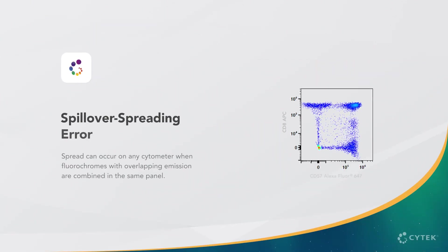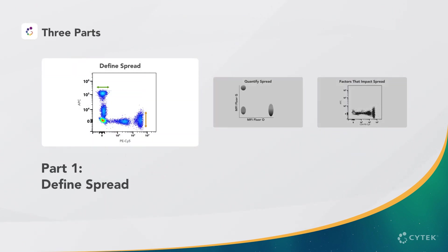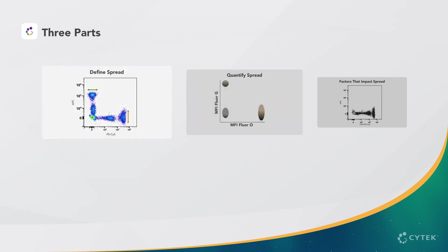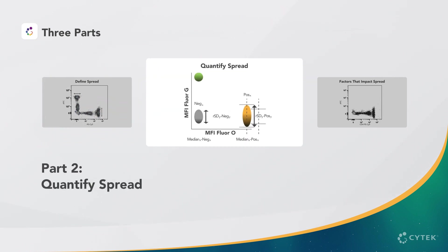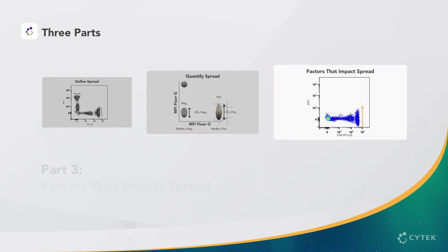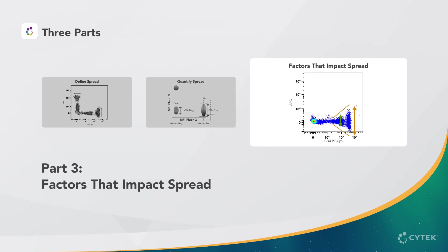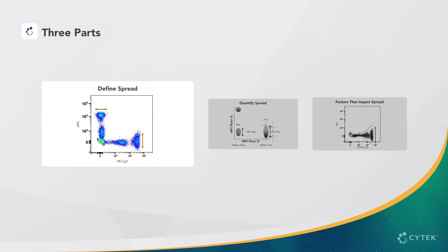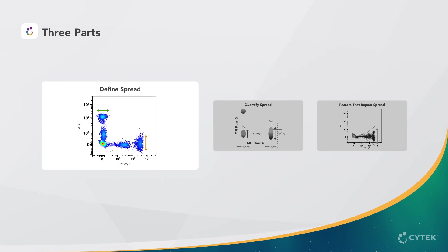When fluorochromes with overlapping emission are combined in the same panel, spillover spreading error, or spread, can be visualized in the data after compensation or spectral unmixing is applied. In this video, we will review examples of spread, show how spread is quantified, and review factors that impact spread. Let's start by reviewing a few examples to define spread and how it impacts antigen resolution.